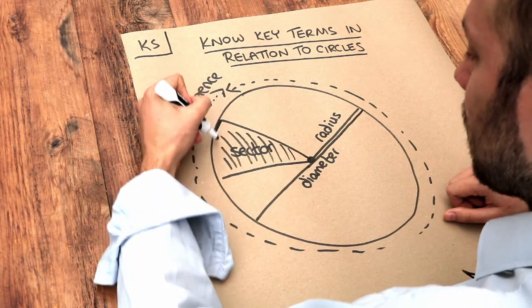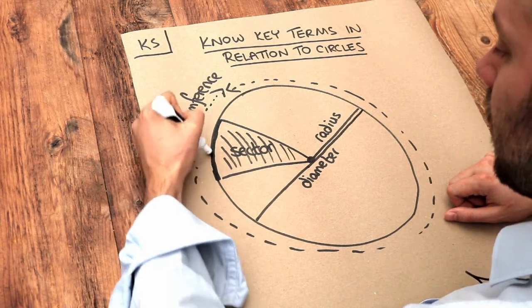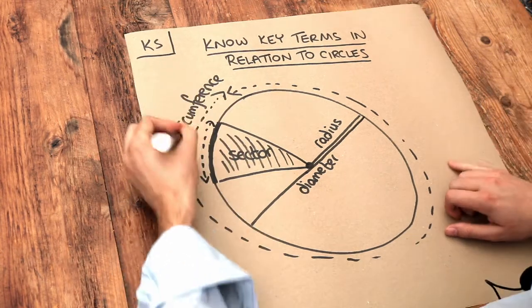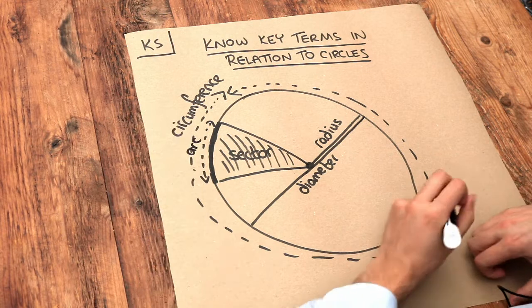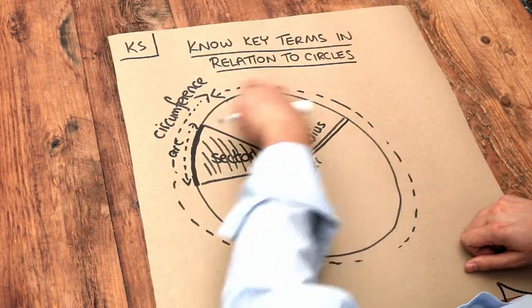And if we were to just have a portion of the perimeter of the circle, so just this bit of line here, that is known as an arc of the circle. So an arc is just a portion of the circumference.